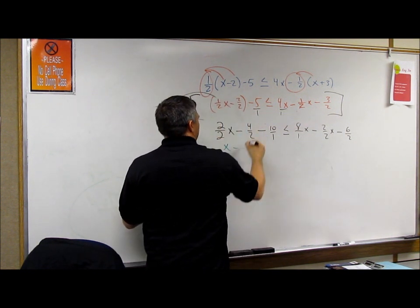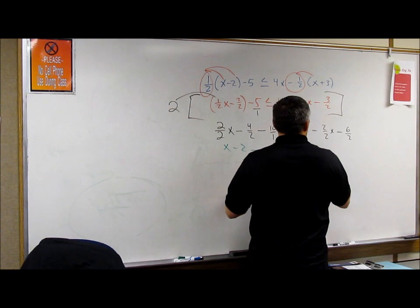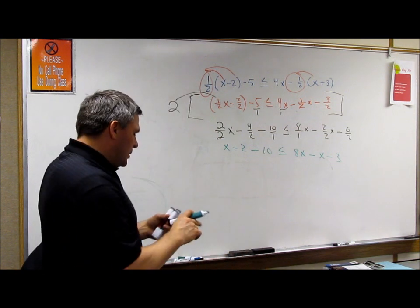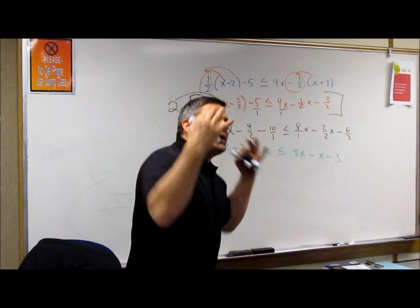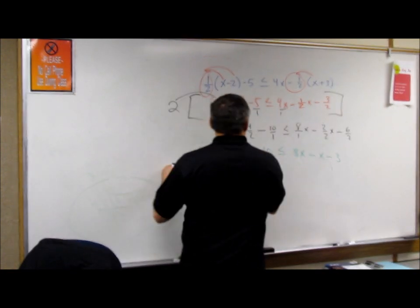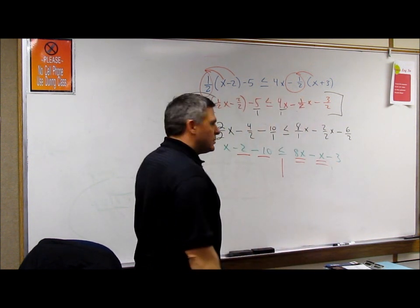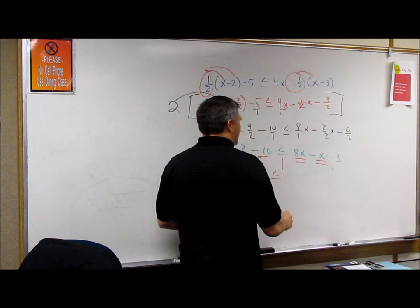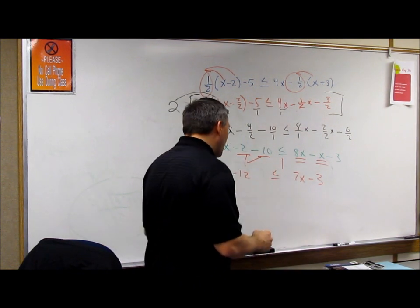That's x minus minus 2 minus 10 less than or equal to 8x minus x minus 3. Then I move on. And now it's the same problem as all the ones were before. Collect your like terms. x goes first minus 12 is less than or equal to 7x minus 3.